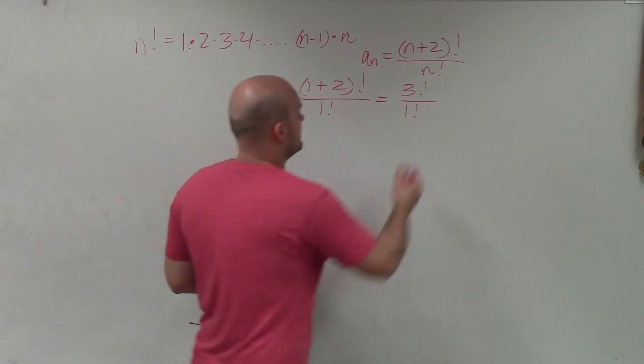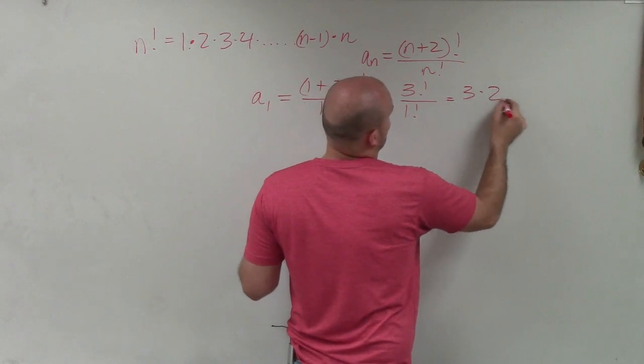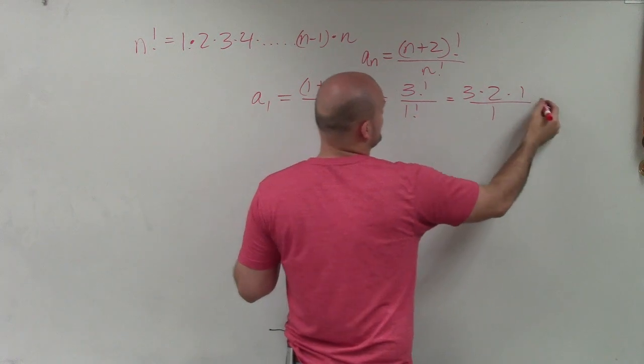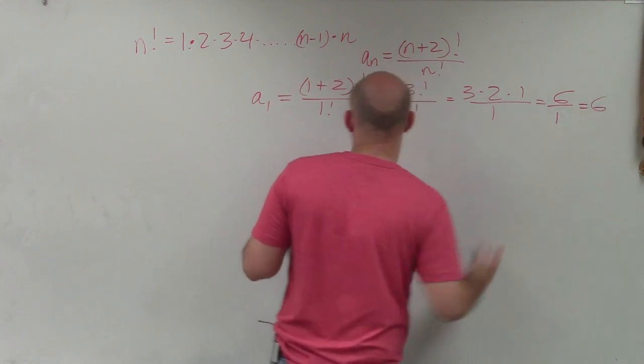So that becomes 3 factorial over 1 factorial. Well, 1 factorial is just going to be 1, and this becomes 3 times 2 times 1 over 1. Well, 3 times 2 is going to be 6 over 1, which is equal to 6.